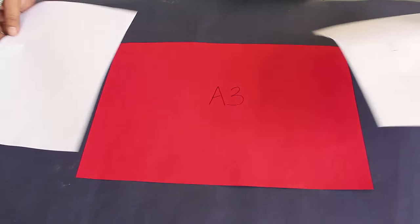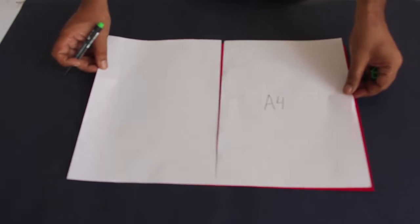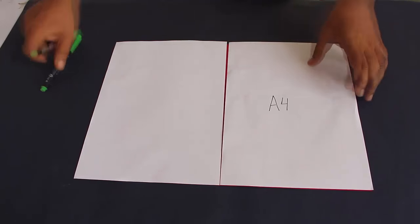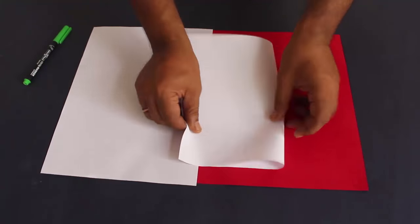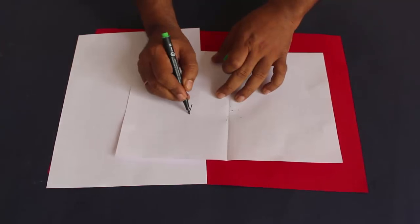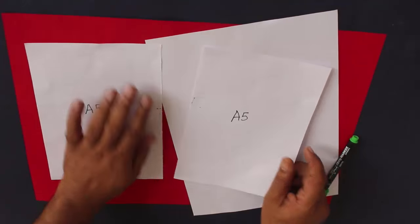So for instance I can combine these two A4 papers to make an A3 paper. Or I can divide A4 in two parts and this is A5.